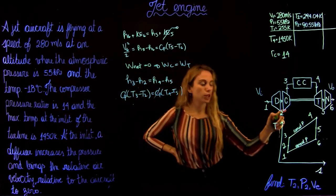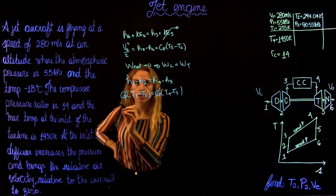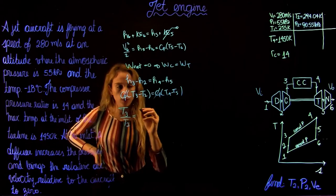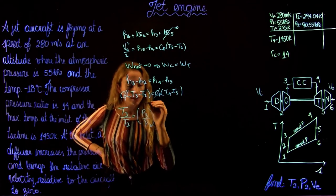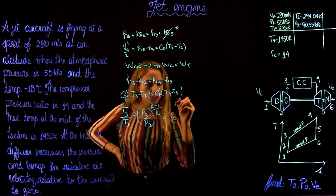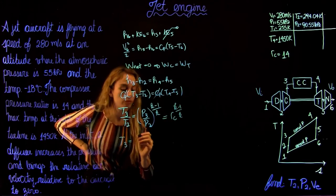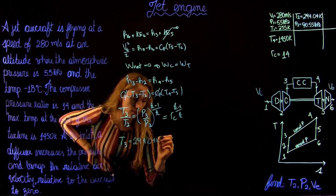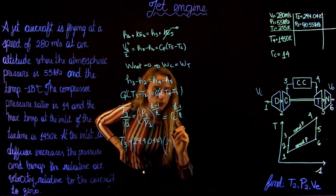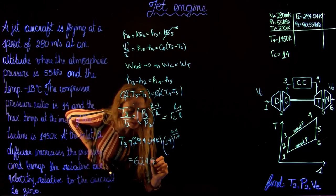We can find T3 using the isentropic compression and the compressor ratio: T3/T2 = RC^((k−1)/k). So T3 = T2 × RC^(0.4/1.4) = 294.04 K × 14^(0.4/1.4), giving a temperature at state 3 of 624.99 Kelvins.